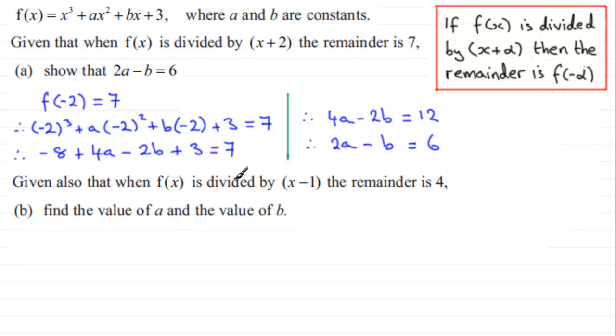Now in the next part we're given also that when f of x is divided by x minus 1 the remainder is 4. So doing really much the same as what we did here using the remainder theorem, only this time we're talking about f of 1.